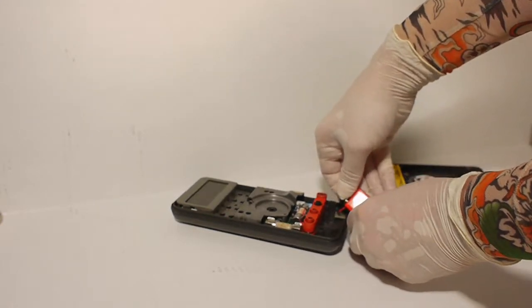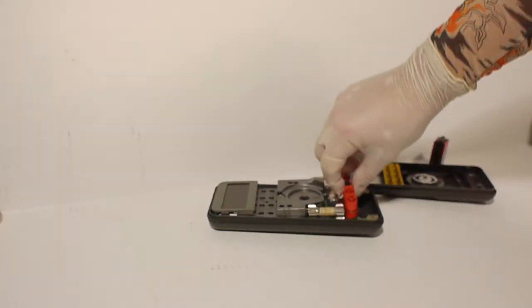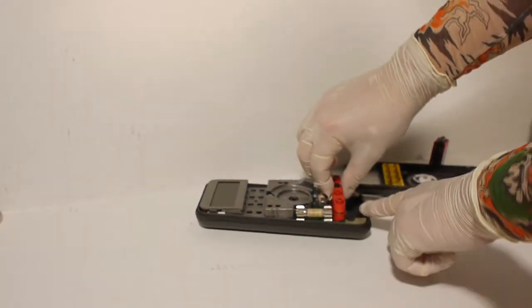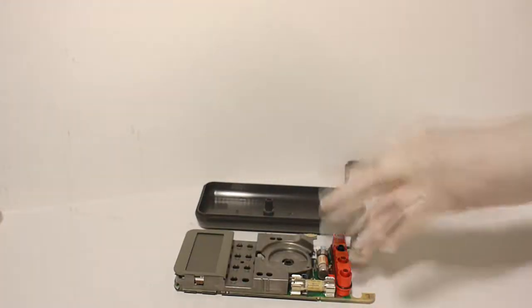Step number three. Remove the nine volt battery. Step number four. Lift the PCB out of the bottom case by lifting up on the input connector.